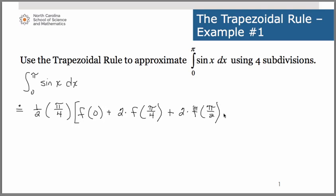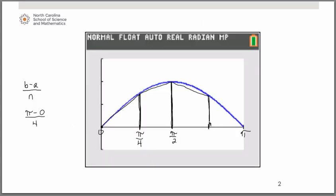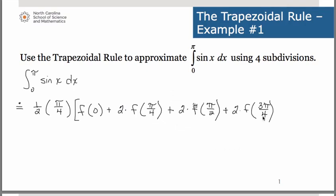Similarly, we're going to have 2 times the function value at 3 pi over 4. That would be this length right here, which is the bottom base for the third trapezoid and the top base of the fourth trapezoid, which has also morphed into a triangle. That base of the last trapezoid only gets used once. So we end by adding in f of pi.